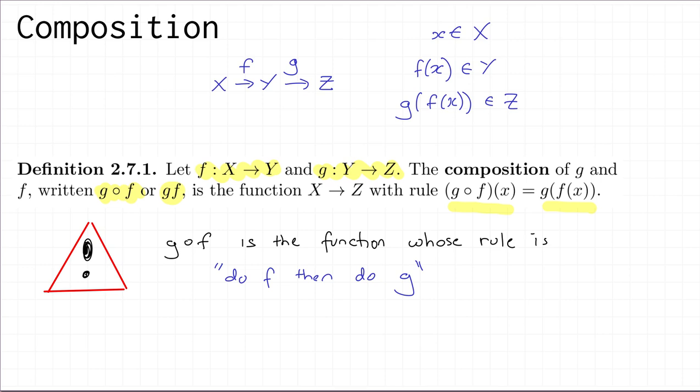You might think: why do we write it this way? Why not write f composed with g? The answer is that if we write g∘f and put x on the right, it's clearly f which happens first. People did used to write these things the other way around — in the 20th century, especially in group theory, people really did write f applied to x in a different order. But that's too confusing, so we'll just remember that g∘f is the function whose rule is: do f first, then do g.